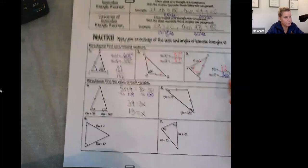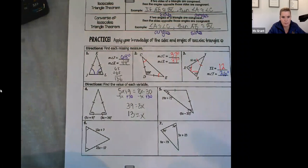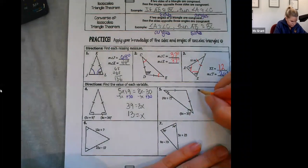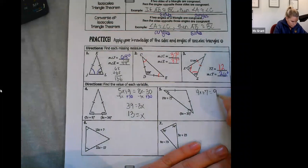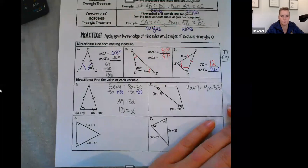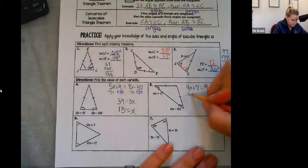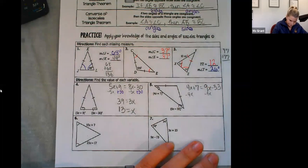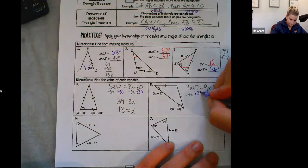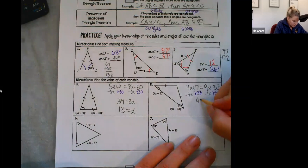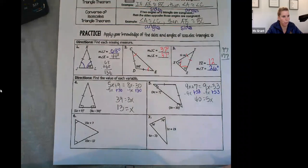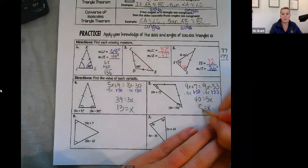Number five. Base angles. Same issue. Set them equal to each other. 4X plus 7 equals 9X minus 33. Subtract 4X. Move the 33 to the left. 40 equals 5X. X equals 8. Does this seem pretty easy, you guys?